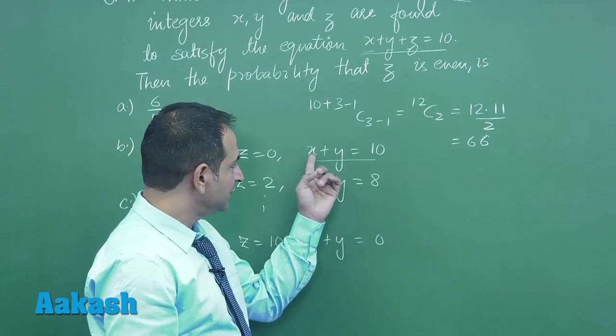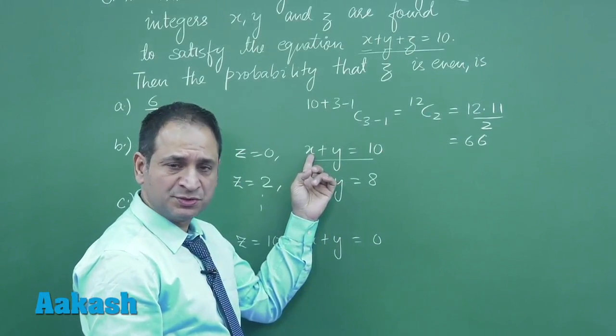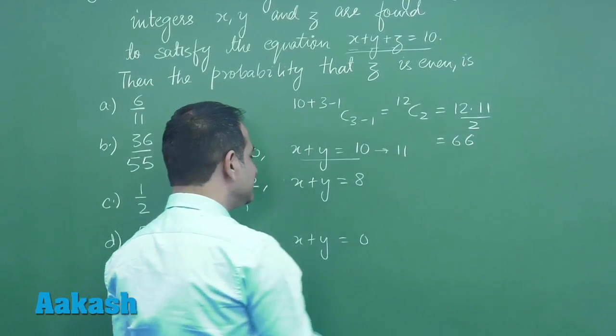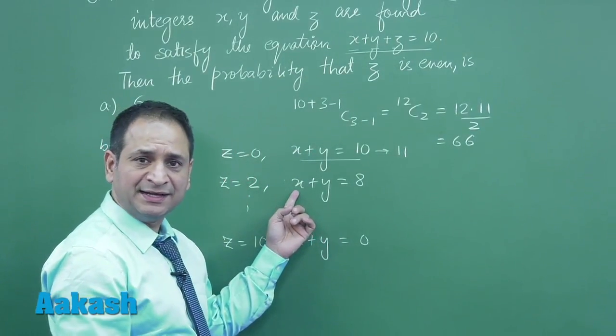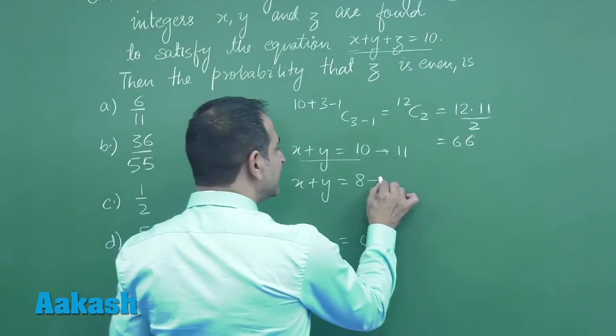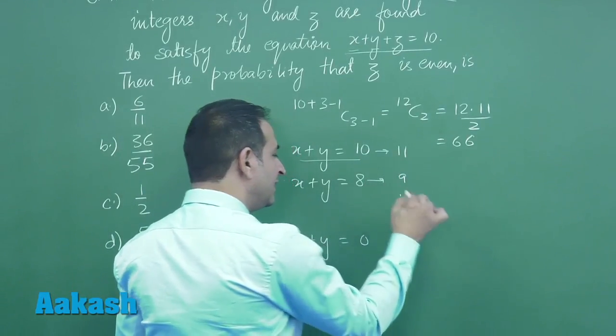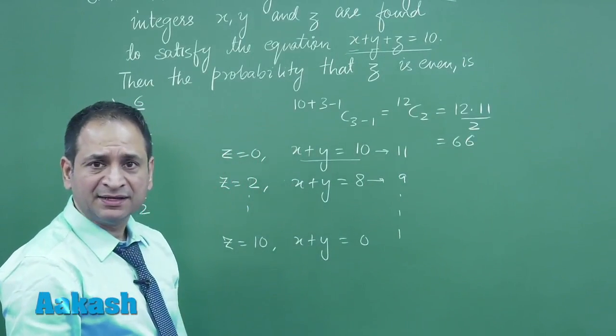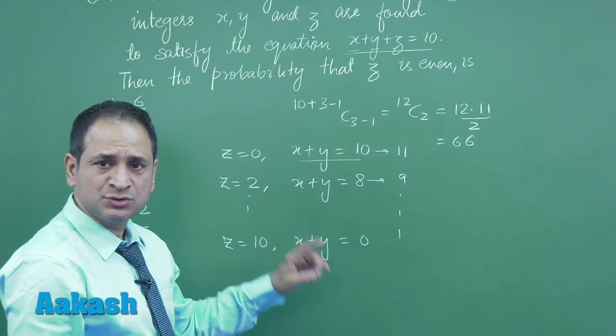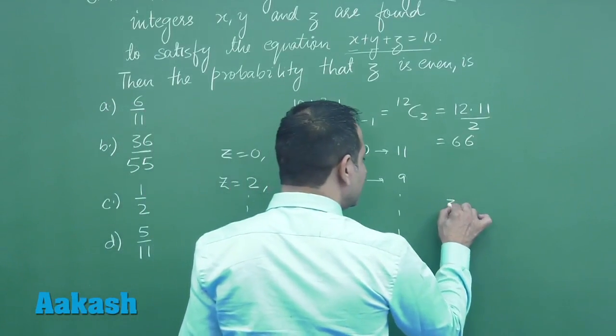The value of x here can be anything from 0 to 10. There will be 9 cases for each. If we add all these cases, the sum that comes is 36.